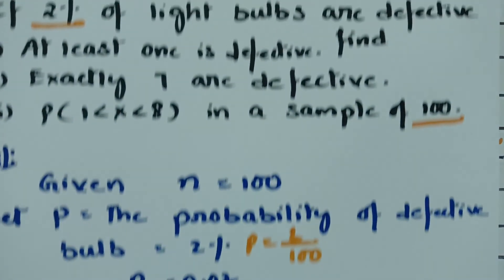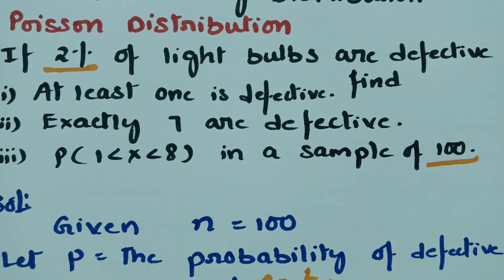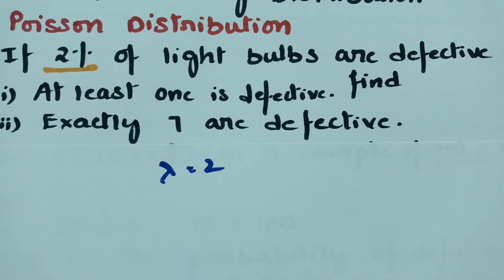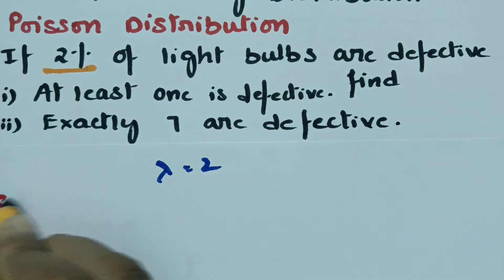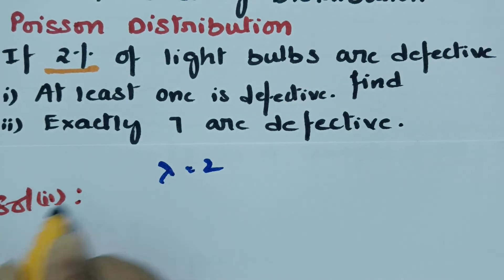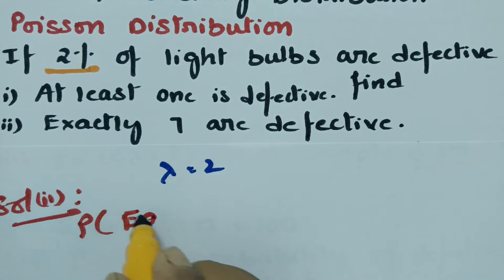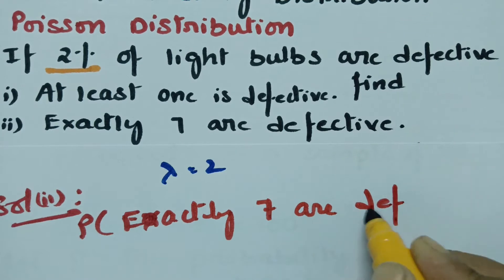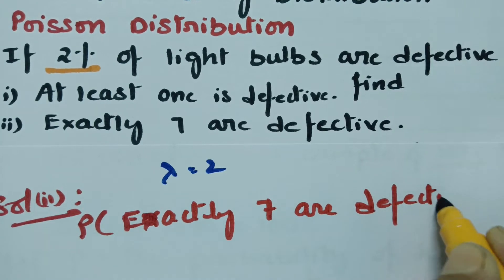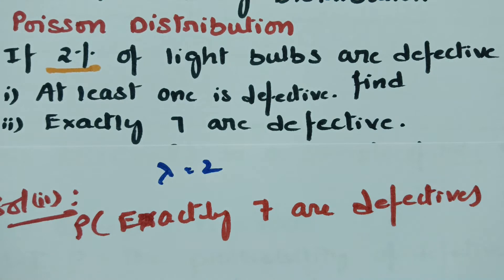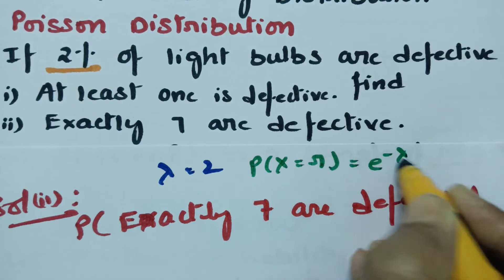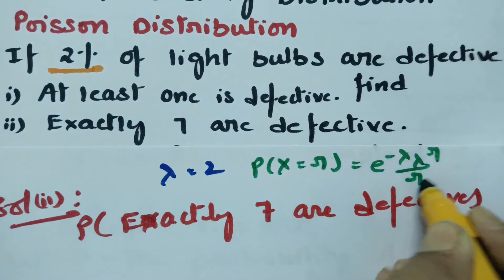The second question is exactly 7 are defective. Lambda value is equal to 2. Solution 2: probability of getting exactly 7 defective. The formula is probability of x equals r, equal to e power minus lambda, lambda power r by r factorial.